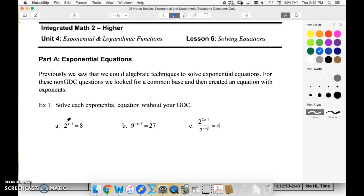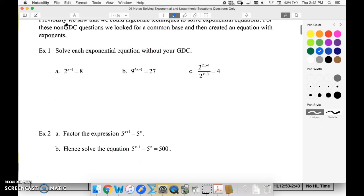So I've got 2 to a power equals 8. Well, the first thing I'm going to do is make 8 equal to a base 2, so 2 to the x minus 1 equals 2 to the 3rd. If these two expressions are equal, that means x minus 1 must equal 3, so x must be 4.